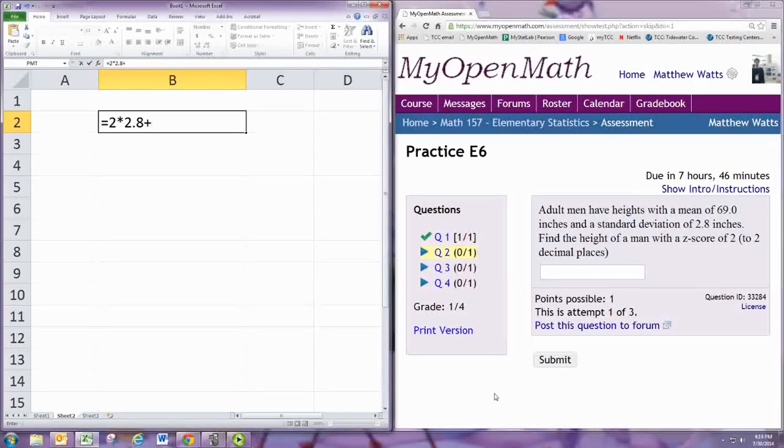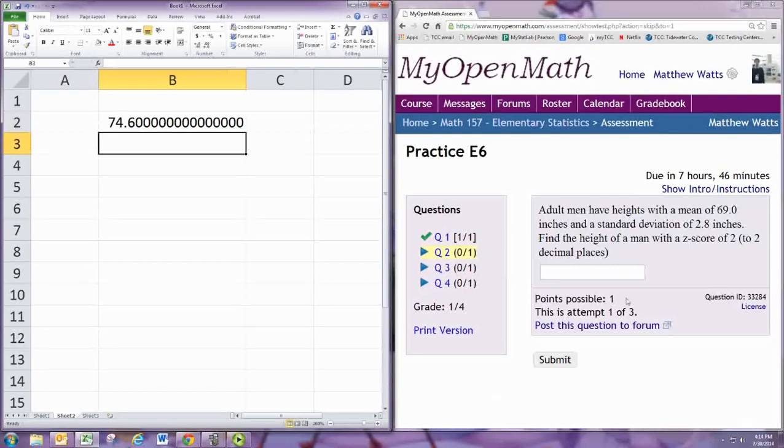So you would add that to the mean height. Okay, so two standard deviations above the mean. And that would be 74.6.